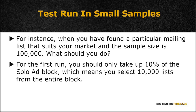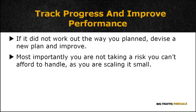For instance, when you find a particular mailing list that suits your market and the sample size is 100,000, for the first run you should only take up to 10% of the solo ad block — which means selecting 10,000 lists from the entire block. This gives you the chance to track your progress and observe your performance, and identify if the solo ad is in fact the suitable market for you. If it didn't work out as planned, devise a new plan and improve. Most importantly, you are not taking a risk you can't afford, as you are scaling it small.